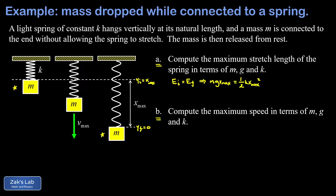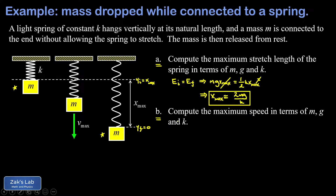We get two solutions; one is X_max equals zero, which we're not interested in. Dividing out one factor of X_max and solving — multiplying both sides by 2 and dividing by K — we find the maximum stretch length is 2mg over K.